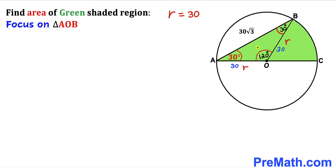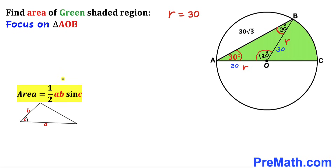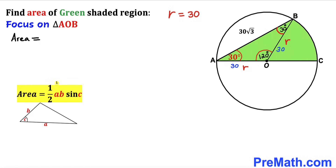Let's recall the area of a triangle formula: Area equals one half times side A times side B times sine of angle C, where A and B are the side lengths and C is the included angle. In triangle AOB, our side lengths are both 30 and the included angle is 120 degrees.